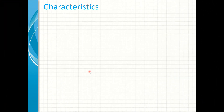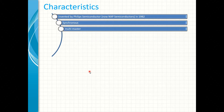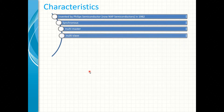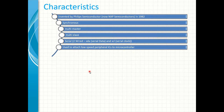I2C was invented by Philips Semiconductor, now NXP Semiconductors, in 1982. It is a synchronous multi-master, multi-slave, serial two-wire bus protocol. The two wires are SDA and SCL for serial clock, used to attach low-speed peripherals to microcontrollers.